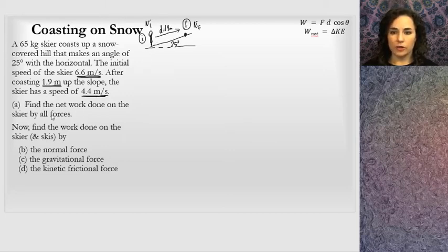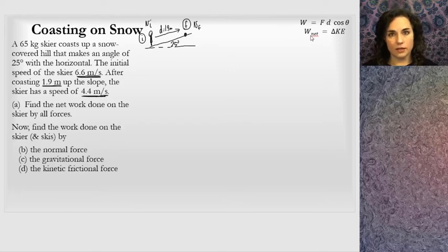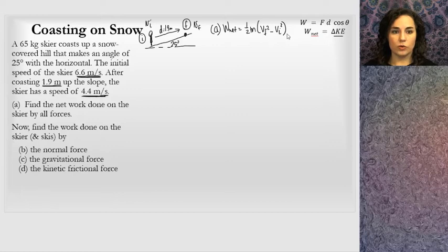Part A says: find the net work done on the skier by all forces. The problem gives us the two speeds — initial and final. Net work can be found two ways: add up all individual forces, or use this new tool and find the change in kinetic energy. For part A, net work equals the change in kinetic energy, which is one-half m times v-final squared minus v-initial squared.